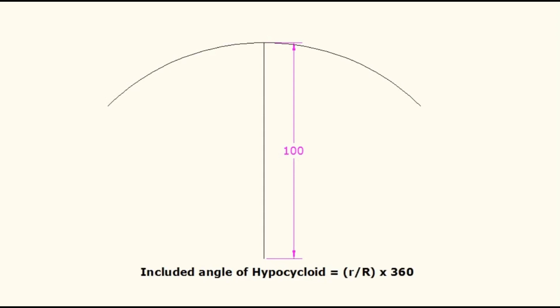Then the included angle of hypocycloid is calculated by the formula: small r divided by capital R times 360. Small r is the radius of generating circle or rolling circle. Capital R is the radius of directing circle.